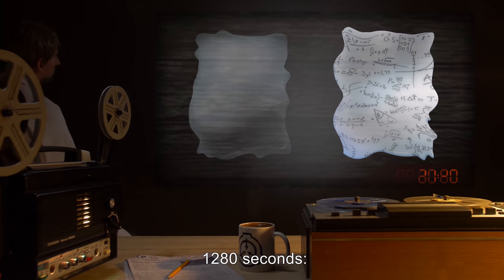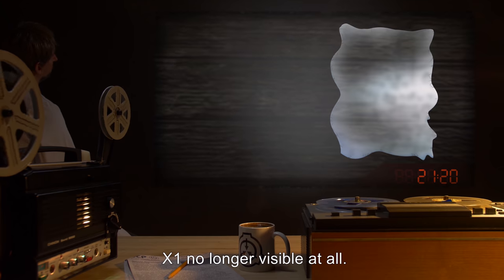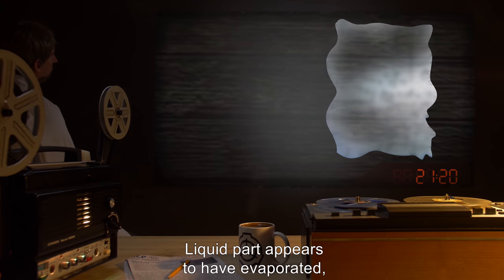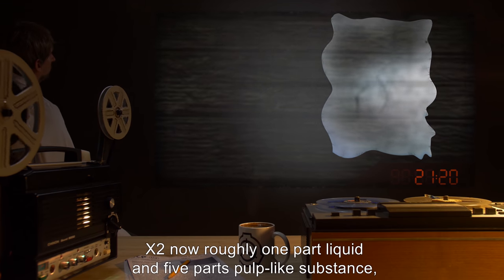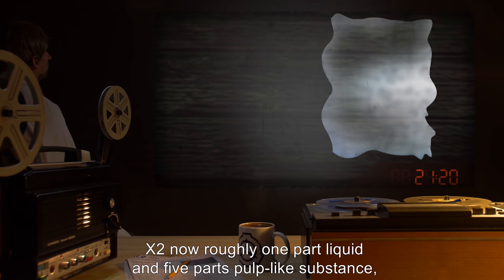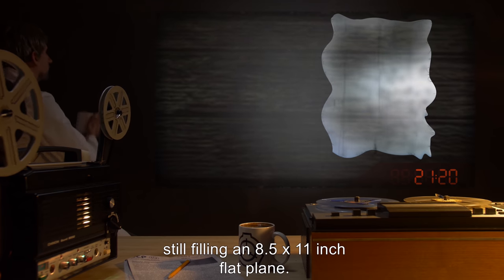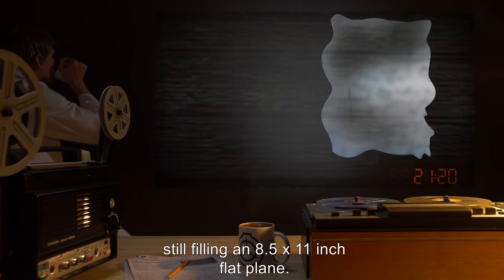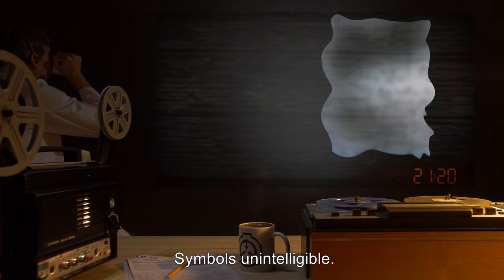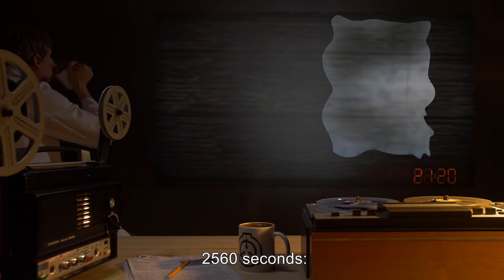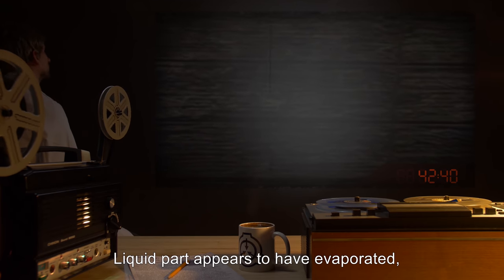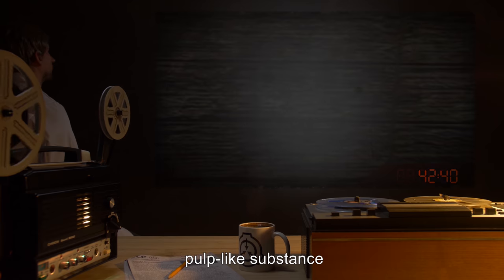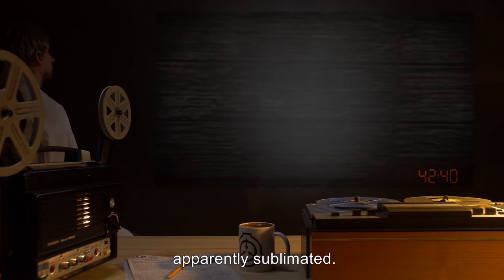One thousand two hundred and eighty seconds: X-1 no longer visible at all. Liquid part appears to have evaporated. Pulp-like substance apparently sublimated. X-2 now roughly one part liquid and five parts pulp-like substance, still filling an 8.5 by 11 inch flat plane. Symbols unintelligible. Two thousand five hundred and sixty seconds: X-2 no longer visible at all. Liquid part appears to have evaporated. Pulp-like substance apparently sublimated.